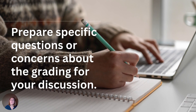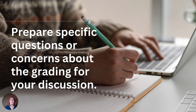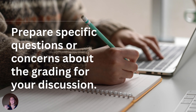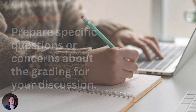Prepare specific questions or concerns about grading for discussion. If it was a particular portion of your grade, ask: can you explain what I did wrong or what I could have done better? Or can you explain how the grading rubric was applied here? Ask them to walk you through it, and make sure you're not confrontational or placing blame on the professor. This will help you get a much better result from the conversation.